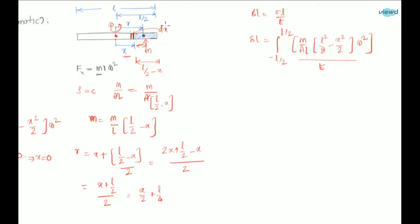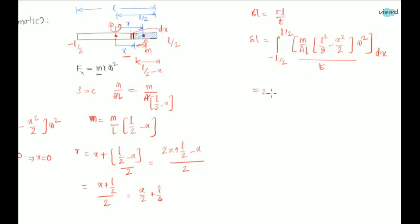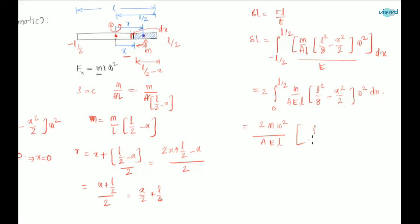Here the elementary length is dx. The limits from -l/2 to l/2 span the total length l. Since the integrand is an even function, we can write it as 2·∫₀^(l/2) [(M/AEl)·(l²/8 - x²/2)·ω²] dx. Taking out the constants: 2Mω²/(AEl) · ∫₀^(l/2) (l²/8 - x²/2) dx.